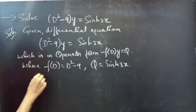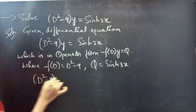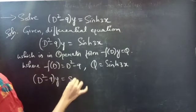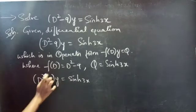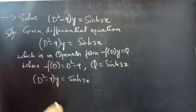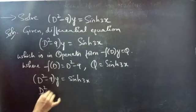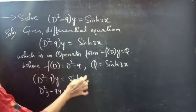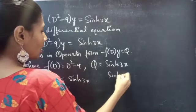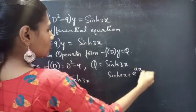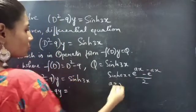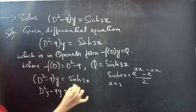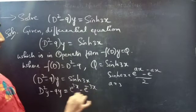Let's find the order and degree of the given equation. We can write (D² - 9)y as D²y - 9y. We also know that sinh(ax) = (e^(ax) - e^(-ax)) / 2. So for a = 3, sinh(3x) = (e^(3x) - e^(-3x)) / 2.